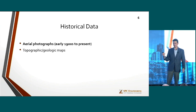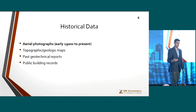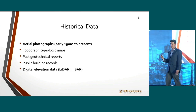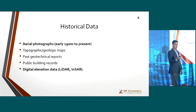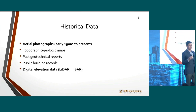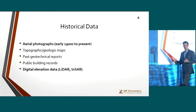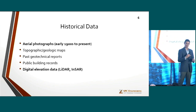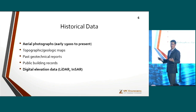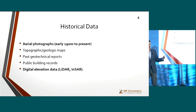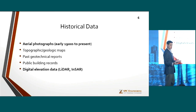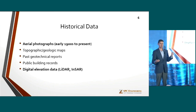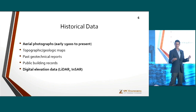Topographic and geologic maps, past geotechnical reports, public building records, and how the infrastructure was constructed — these are all very important. I want to highlight digital elevation data. For the landslide scenario, we can collect topographic data after the landslide occurred, but information from before the landslide is very important for slope stability back-analysis. USGS has great LiDAR data publicly available to recreate pre-landslide topography. But for a deep excavation causing building movement, that LiDAR data doesn't have enough precision, and we may need something more robust like InSAR data.